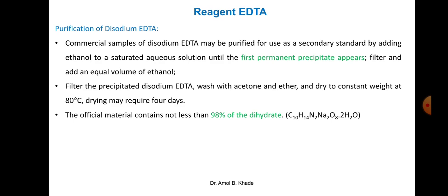Commercial samples of disodium EDTA may be purified for use as a secondary standard or titrant by adding ethanol to a saturated aqueous solution until the first permanent precipitate appears. We then filter the precipitate and add an equal volume of ethanol again. The precipitate is then filtered, washed with acetone and ether, and dried to constant weight at 80°C, ensuring all solvents have evaporated. This drying is carried out for four days.